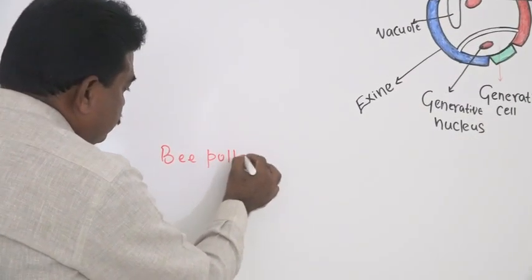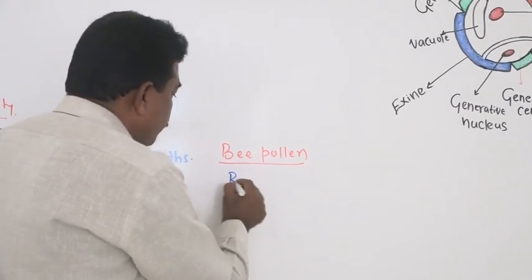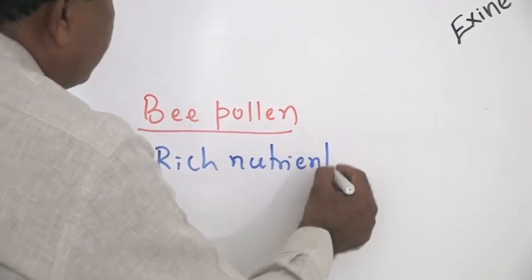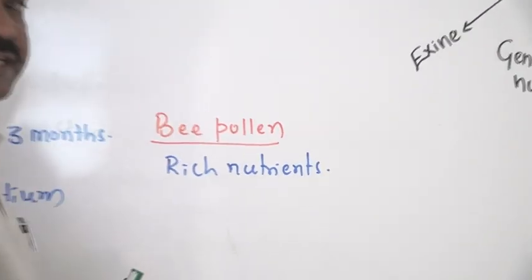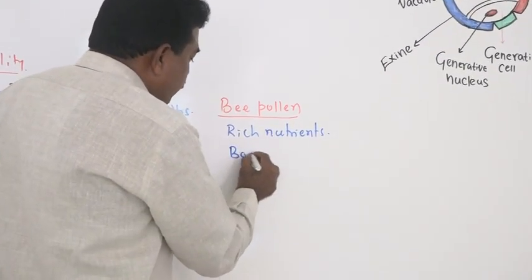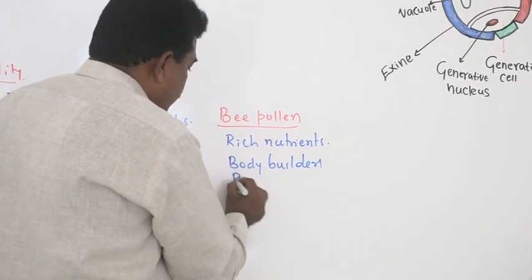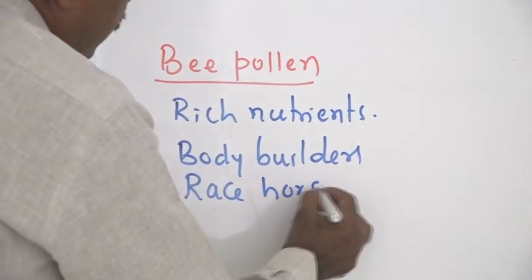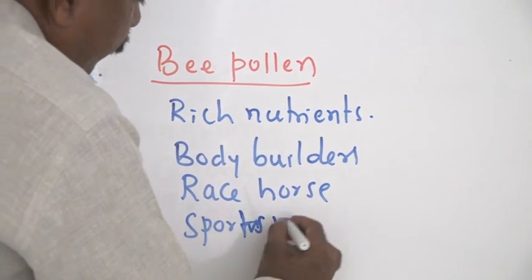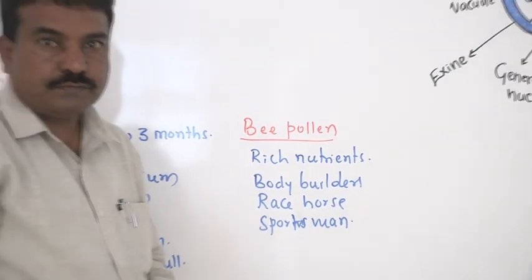One more important term is bee pollen. The pollen grains are rich in nutrients. Therefore, in Western countries, they are used as energy drink or supplementary food. They are used in body builders for horses and also for sportsmen, mainly athletes, because they help to boost the energy.